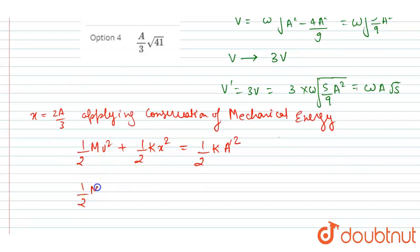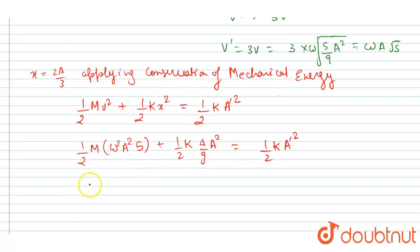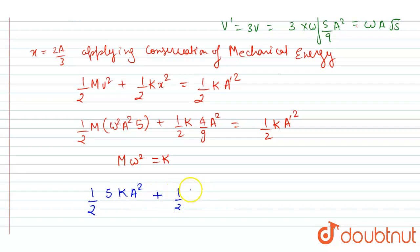I write: half·m·v² = ω²·A²·5. Now half·k·(4/9)·A² equals half·k·A'². We know that ω²·m = k, so we substitute. After putting the value of k, I write: half·5k·A² plus half·(4/9)·2k·A² equals half·k·A'². The halves and k cancel out on both sides.